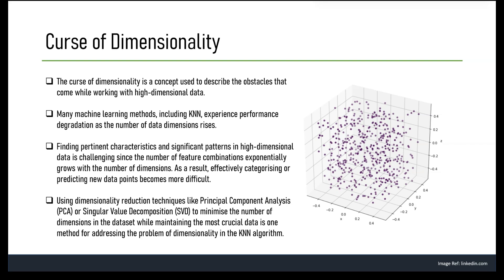The sparsity of high-dimensional data can lead to overfitting, where the model fits the training data very well but fails to generalize to new unseen data. Furthermore, as the number of dimensions increases, the amount of data required to train a model effectively also increases exponentially. To mitigate the curse of dimensionality, various techniques have been developed including dimensionality reduction, feature selection, and regularization, which aim to reduce the number of dimensions or identify the most relevant features.